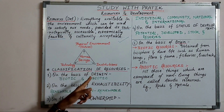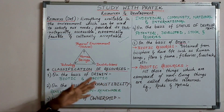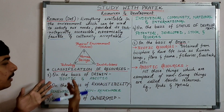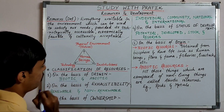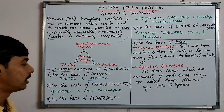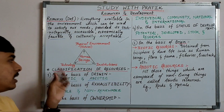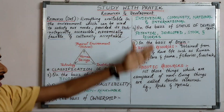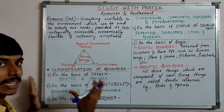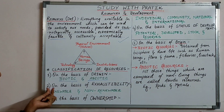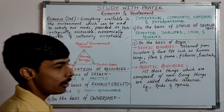On the basis of origin, there are two types: biotic and abiotic — 'jaev' and 'ajaev'. The second classification basis is exhaustibility — which resources will be exhausted and which will not. The third basis is ownership — 'swamitwa'.